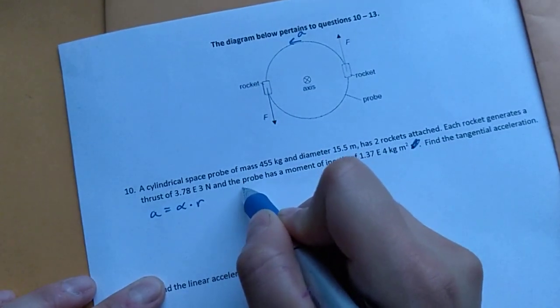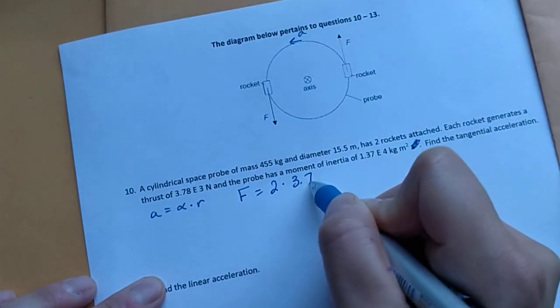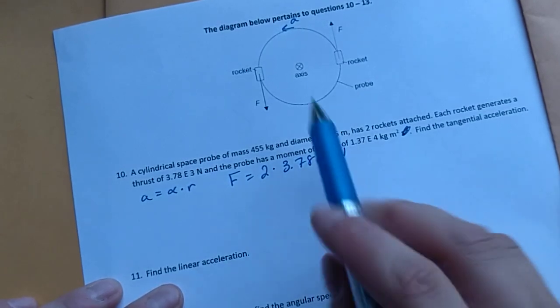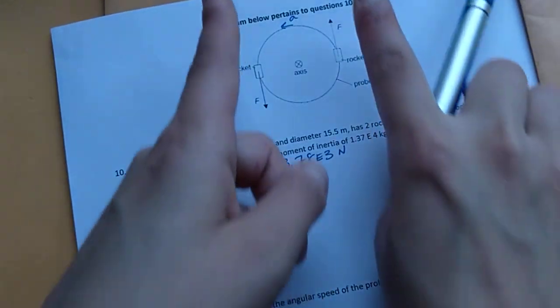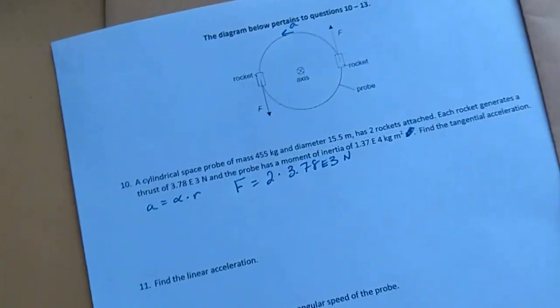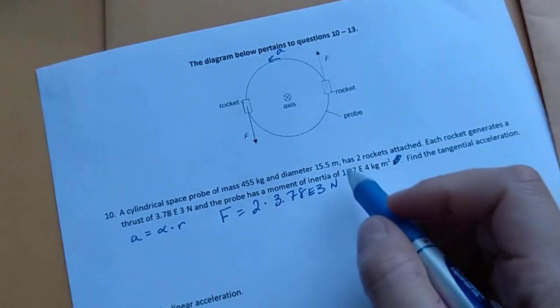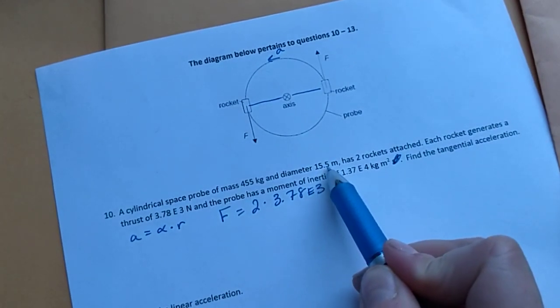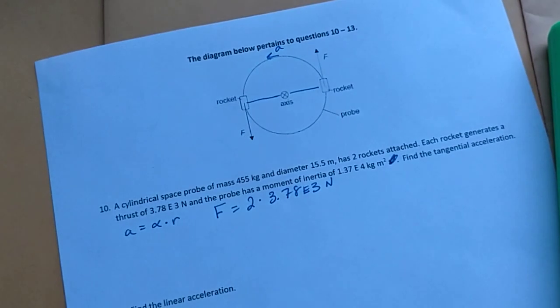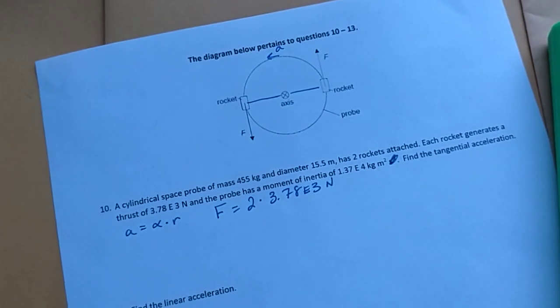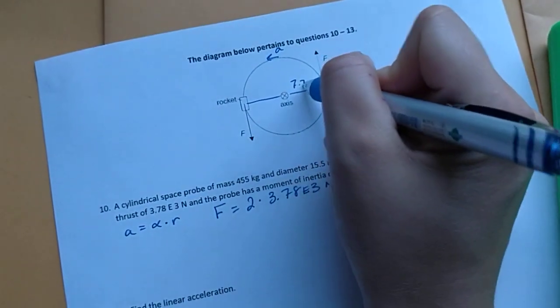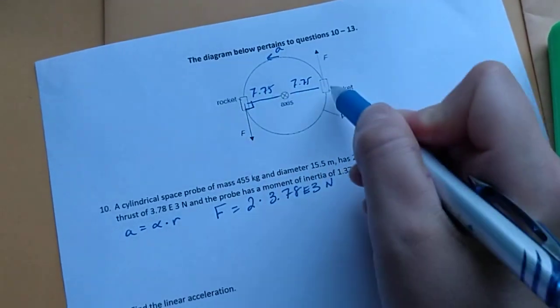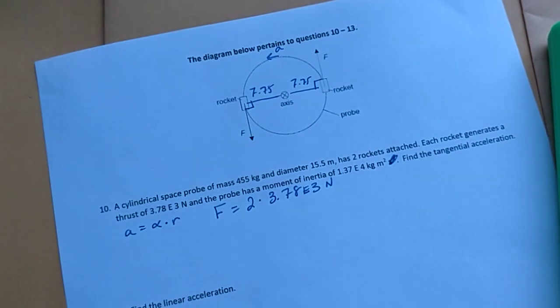So the total force is two times 3.78 E3 newtons. So you can imagine this thing spins. If both of the rockets were pointing in the same direction, the thing would just translate. In this case, because they're opposites, it rotates. So the total force is applied, these forces are applied at a distance of half of this 15.5 meters each. So 15.5 over 2 is 7.75 meters. And that's the distance the force is applied to the moment arm notice. These forces are applied at 90 degree angles from the axis of rotation. So indeed, this is maximum torque.